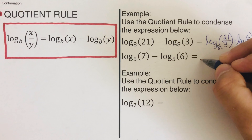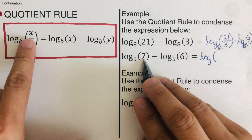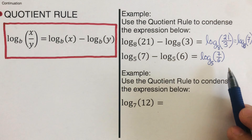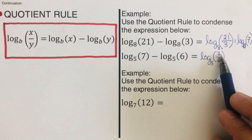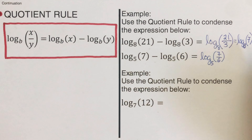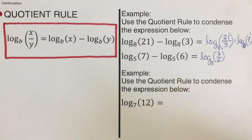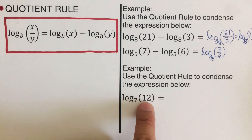We rewrite log of 7 to the base 5 minus log of 6 to the base 5 as log of 7 over 6, to the base 5. We can't reduce this further, so that's the answer. The first condensed result was log of 7 to the base 8, and the second is log of 7 over 6 to the base 5.